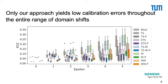We then assessed how calibration performance depends on the amount of domain shift. We observed that the standard method's calibration error increases with increasing domain shift. In contrast, our approach — in particular together with isotonic regression — yielded low calibration errors throughout the entire range of domain shifts, as you can see here.